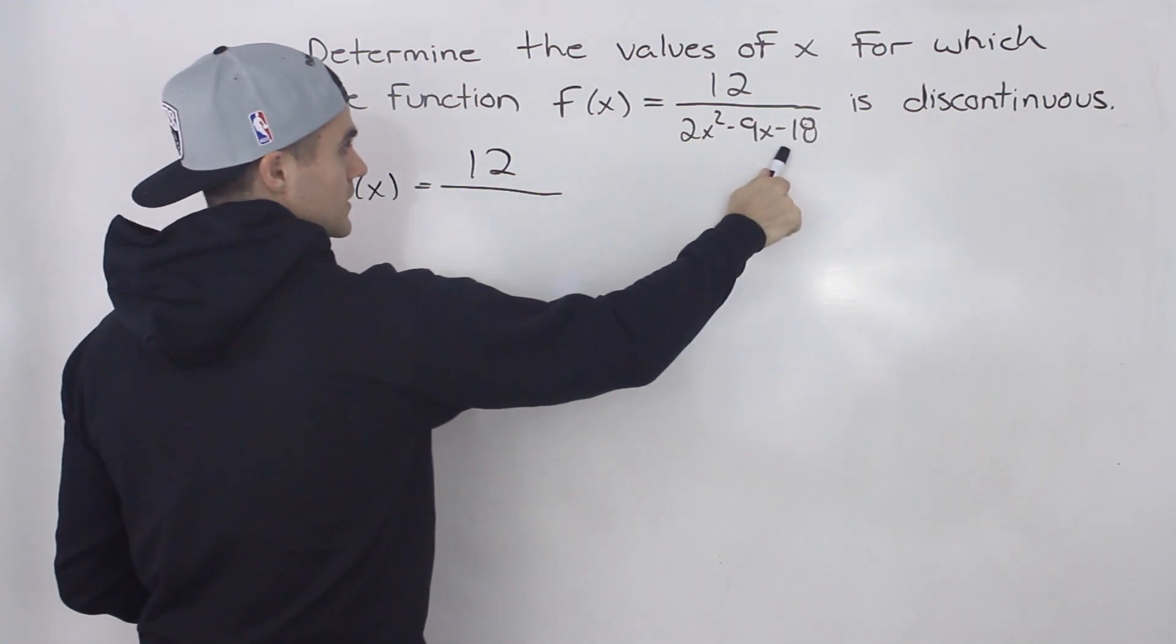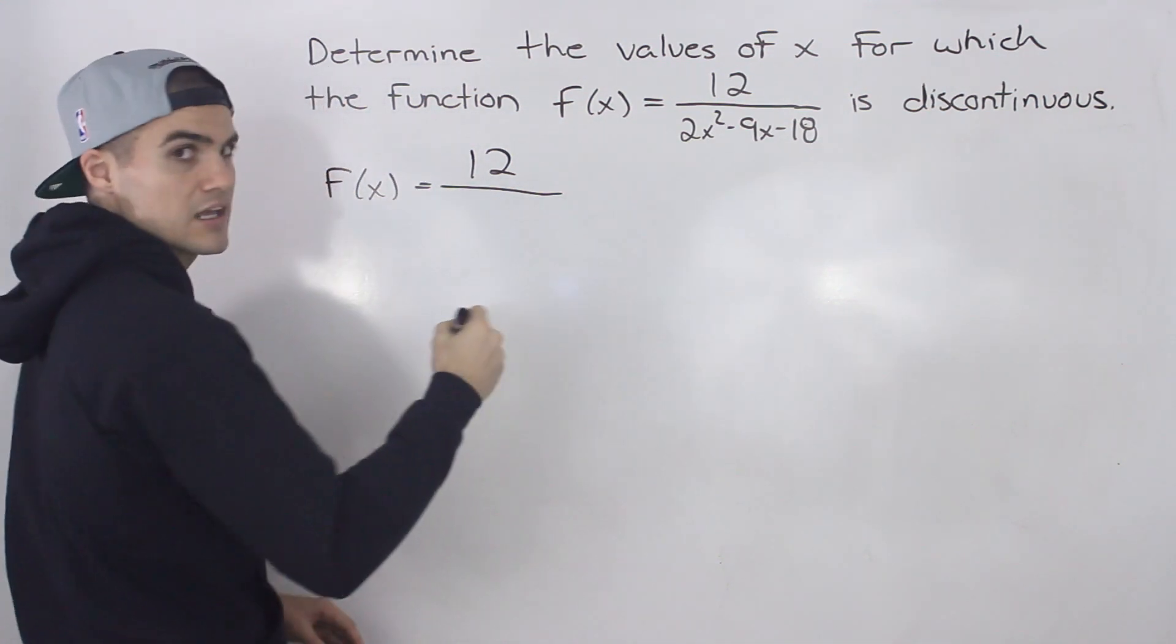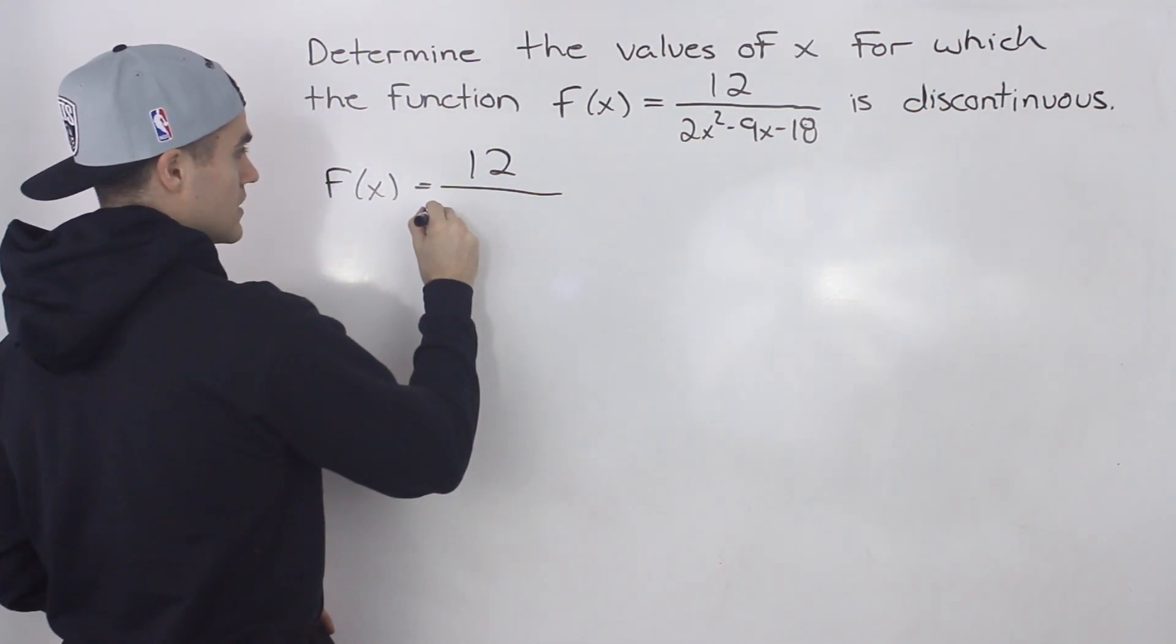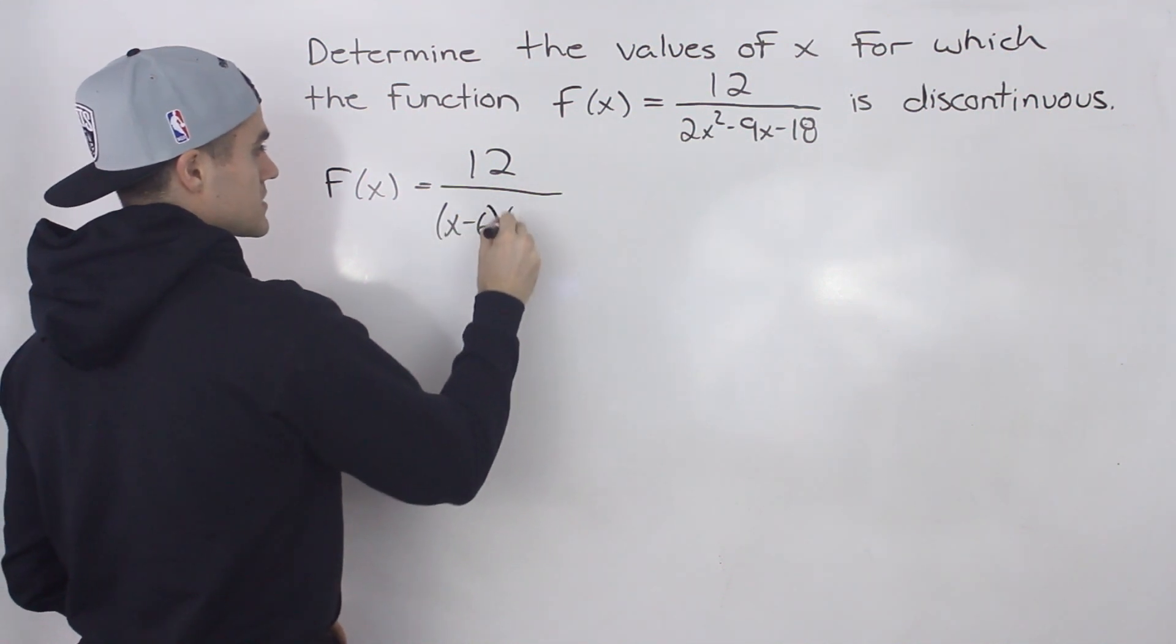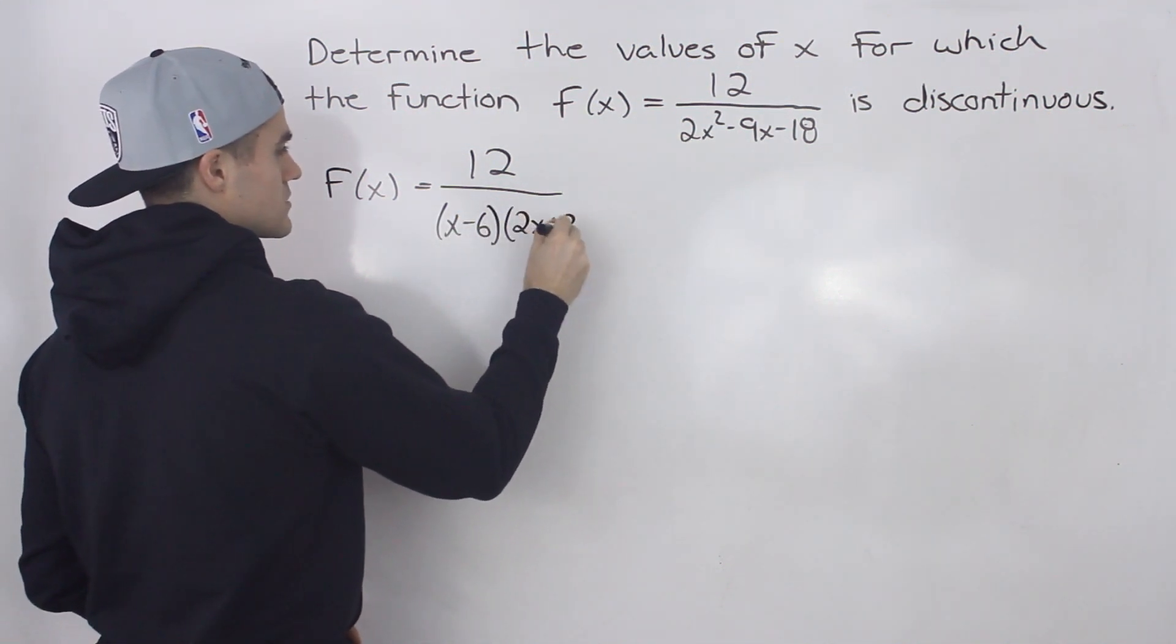So 2x² - 9x - 18, if you factor that with decomposition, you would end up getting (x - 6)(2x + 3).